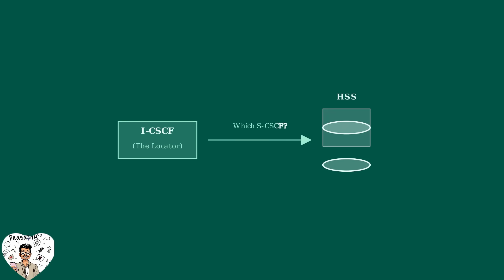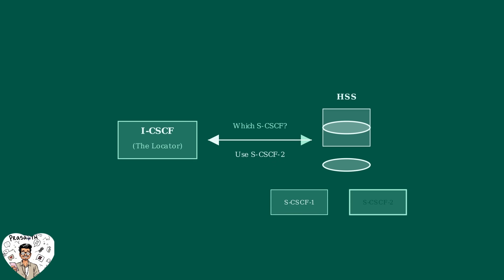Here's where the ICSCF's detective work begins. When it receives a registration request, it queries the HSS — the Home Subscriber Server — to determine which specific SCSCF should handle this particular user's account. The HSS responds by telling the ICSCF exactly which SCSCF is responsible for this user. Think of it like calling directory assistance and being told which specific department can help you with your request.